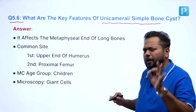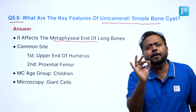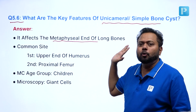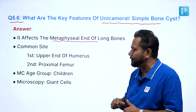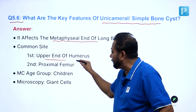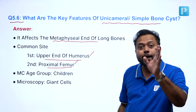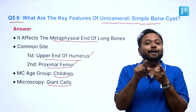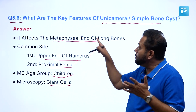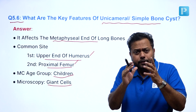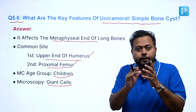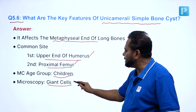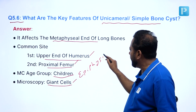The very important point is that it affects the metaphyseal end of the long bone. Whenever we discuss a bone tumor, we should know whether it involves the epiphysis, metaphysis, or diaphysis. This is a metaphyseal bone cyst — simple bone cyst affects the metaphysis. The most common site is the upper end of humerus; the second common site is the proximal femur. The most common age group is children. On aspiration cytology, it will show giant cells, which may cause doubt since giant cell tumor also shows giant cells. Bone cysts are therefore the closest differential diagnosis for giant cell tumor — they all come under giant cell variants in pathology. To differentiate: giant cell tumor affects the epiphysis, whereas simple bone cyst affects the metaphysis. That is the key point.